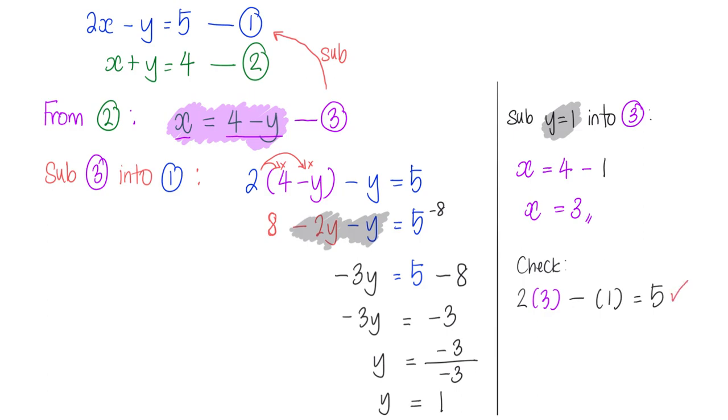x plus y must give me back my 4. So x is 3, y is 1. It does give me back my 4, which is what equation 2 is. Check.